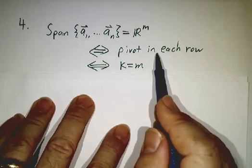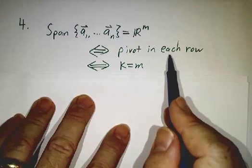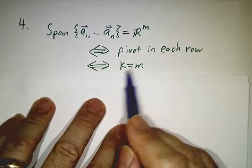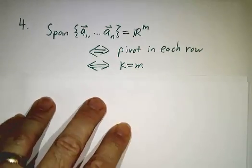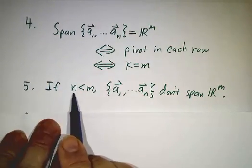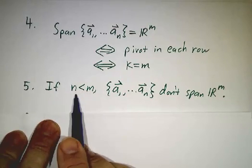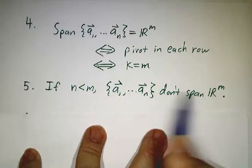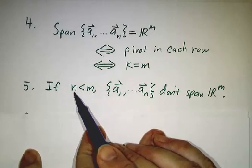But if there isn't a pivot in each row, then for some choices of b, there won't be any solutions. So pivot in each row means the rank equals m. And if you've got a tall and skinny matrix—if n is less than m—then there's no hope of spanning because the rank can never be m, since it's never bigger than n.